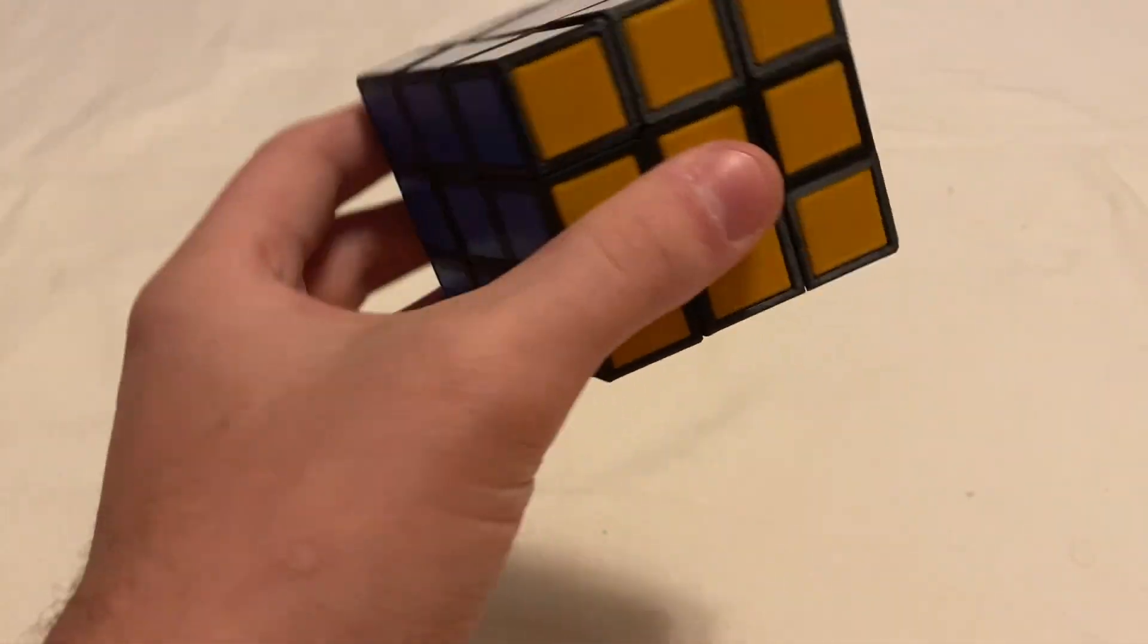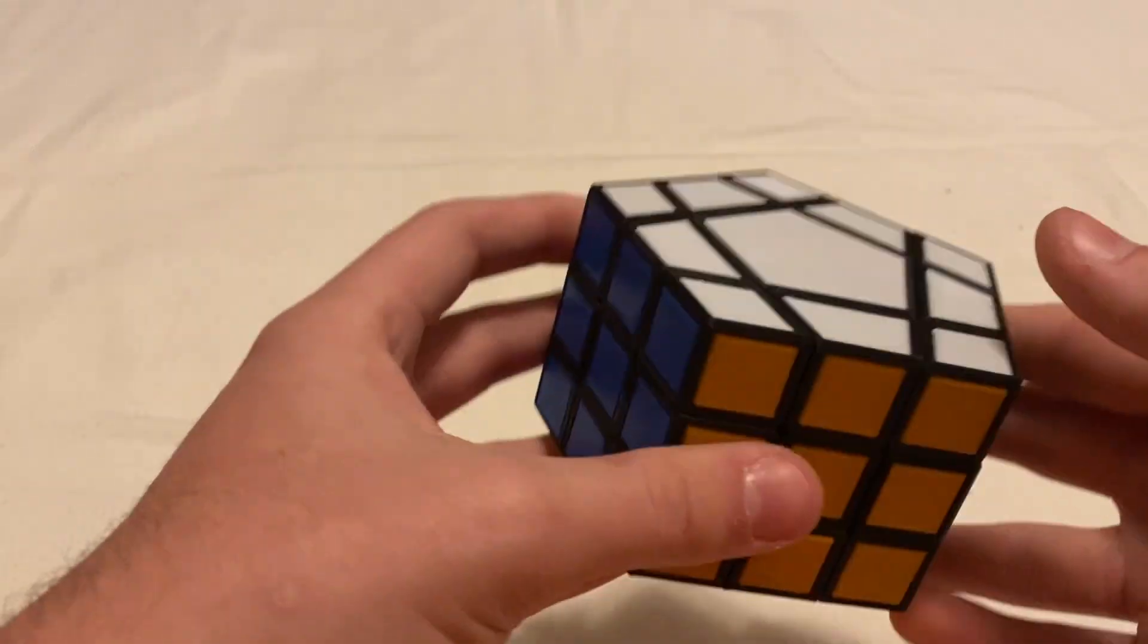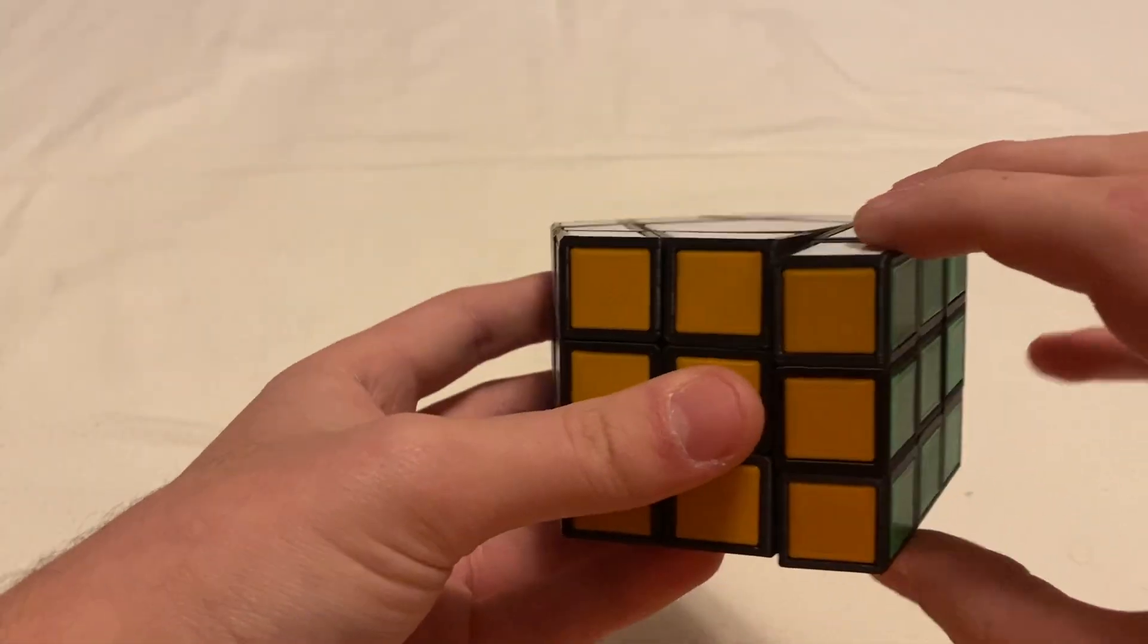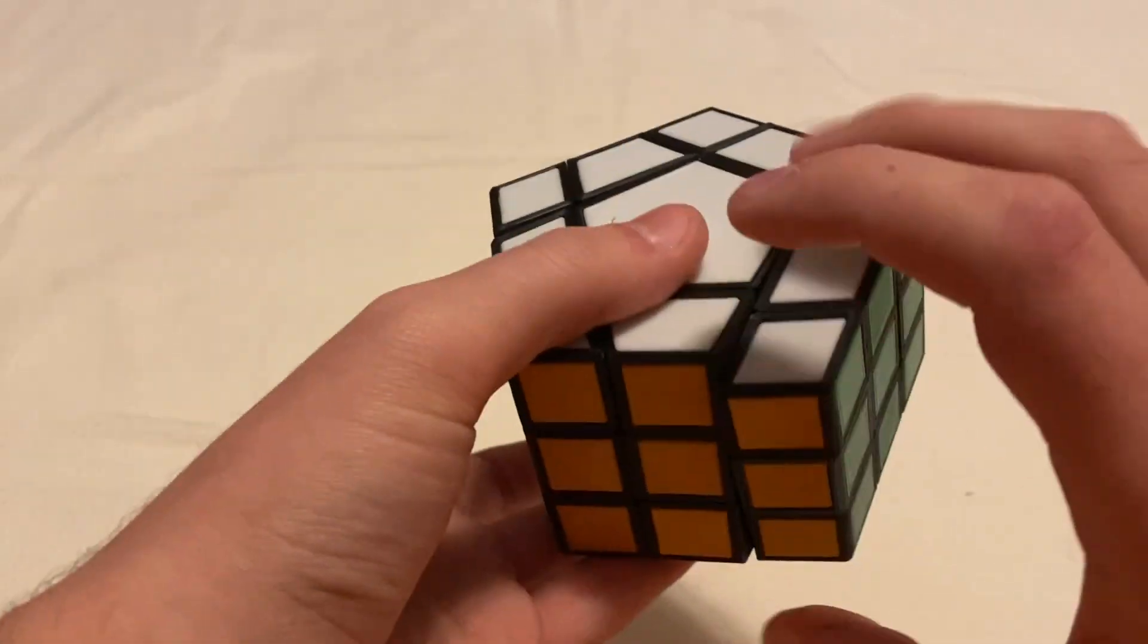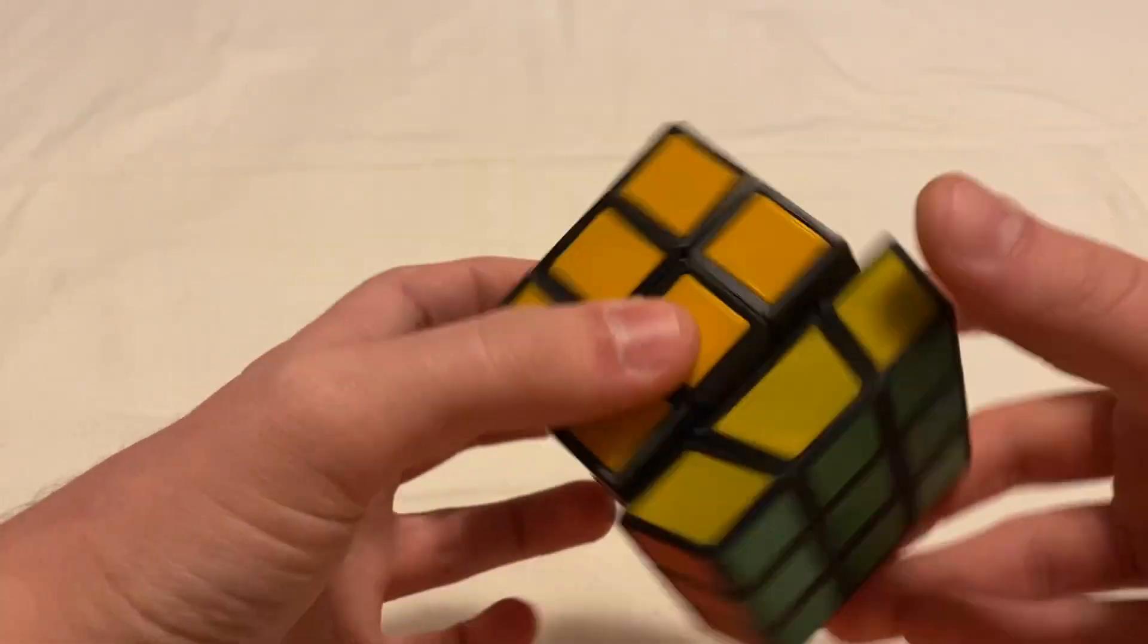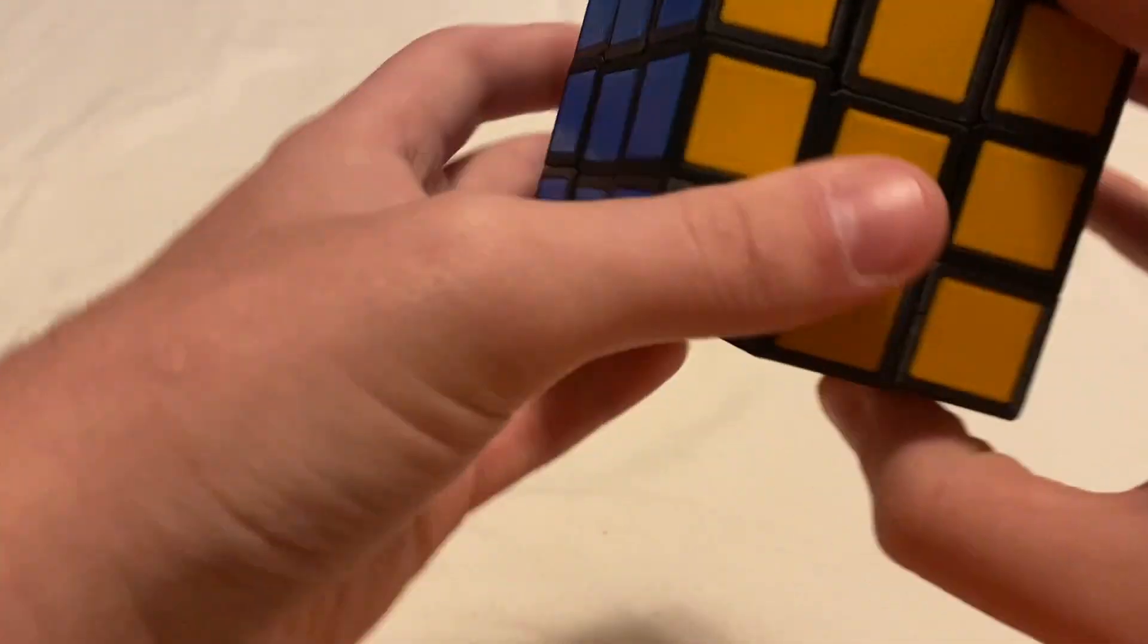And this puzzle functions very similarly to a cuboid. So by that I mean, for the side faces, you can only do half turns. You can't do quarter turns, because it doesn't line up.